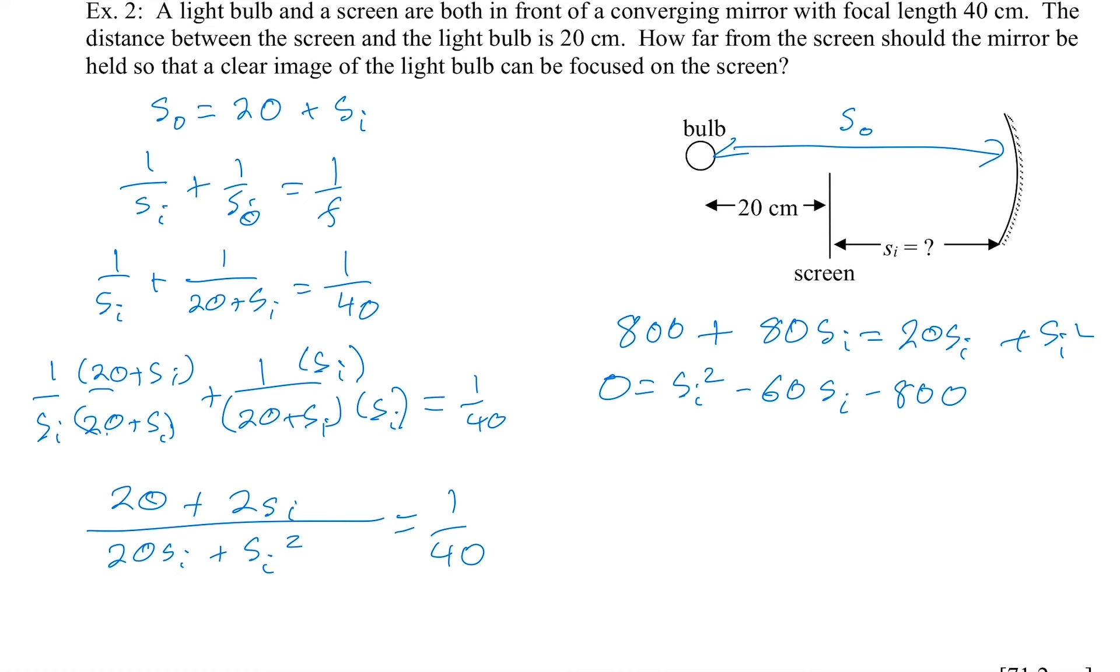Once again, I guess we should use the quadratic formula. So, the quadratic formula is negative B. It's going to tell us what SI is. So, negative B is negative of this. The negative of that is 60. And then plus or minus the square root of B squared. So, negative 60 squared minus 4A. A is just 1 times C. And C is negative 800. All over 2 times A. Well, A is just 1 again. Oh my goodness. I somehow dropped my 2 here.